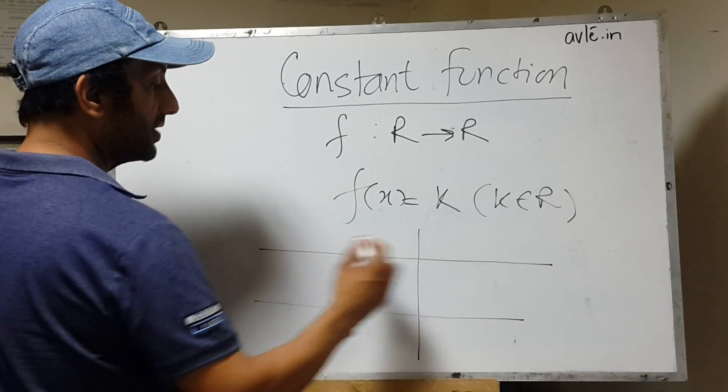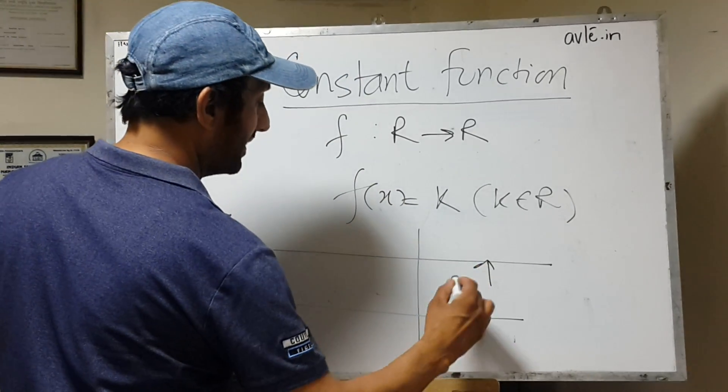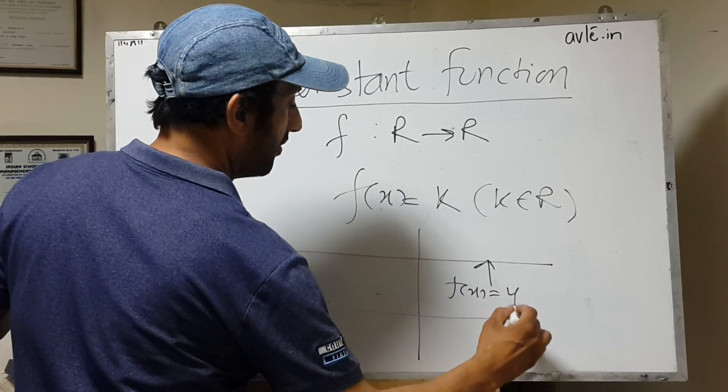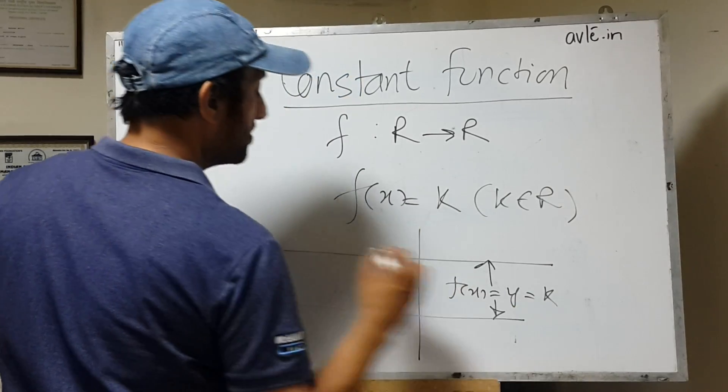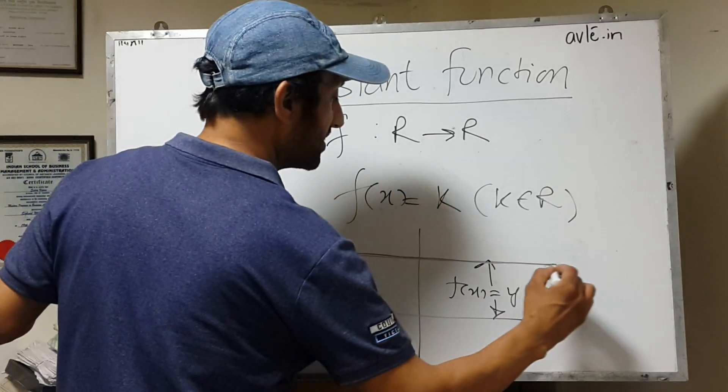It will be a line parallel to the x-axis where f(x) or y equals k. So this is the graph of a constant function.